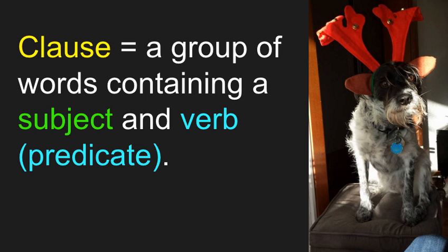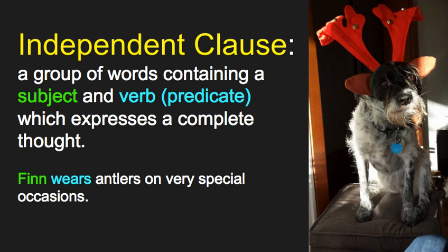There are some terms you're going to need, not only in this video but in the other resources linked in the blog post. The first is a clause — a group of words containing a subject and a verb, sometimes called a subject and predicate. There are two types of clauses. The first is an independent clause, which is a synonym for a sentence. It stands on its own — a group of words containing a subject and verb that expresses a complete thought. Here's an example: 'Finn wears antlers on very special occasions.' It makes sense on its own.